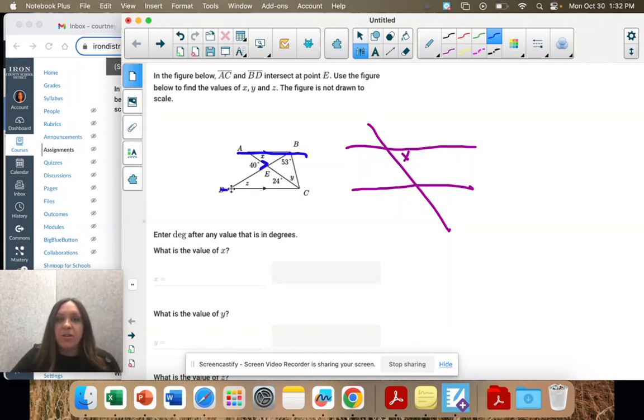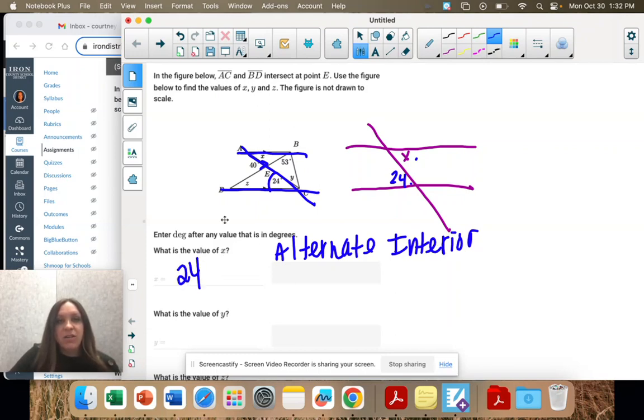I just drew the parallel, the parallel, and the transversal. So that 40 is not related, but this 24 is. Do you remember what type of angles those are? Alternate interior. And they are congruent. So X is 24.